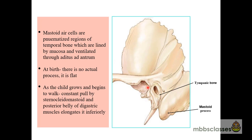This is the styloid process, this is the zygomatic process, this is the fossa for the condyle of the mandible, and this is the squamous part of the temporal bone. The mastoid ear cells are the pneumatized region of the temporal bone, which are lined by mucosa and they are ventilated through the aditus ad antrum.